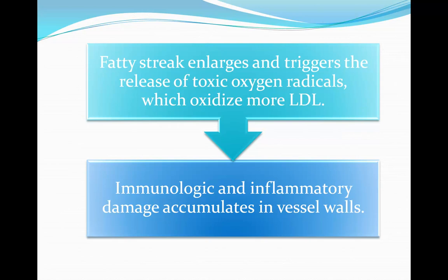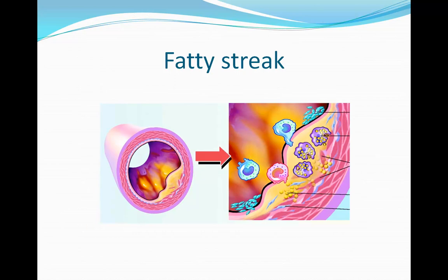Fatty streaks enlarge and trigger the release of even more toxic oxygen radicals. These oxidize even more LDL, which are consumed by even more macrophages, causing the fatty streak to build up. Immunologic and inflammatory damage can thus accumulate in the vessel walls. Here we can see a picture of a fatty streak. There is a fair amount of fat, but there is also quite a bit of space in the lumen. Blood can still flow through, but if it builds up more, it can obstruct blood flow.